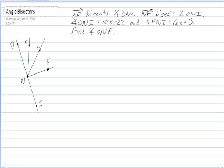And then our second given is that NF bisects angle ONI. So here's O and I, and NF is bisecting that angle, so this angle will be congruent to this one.